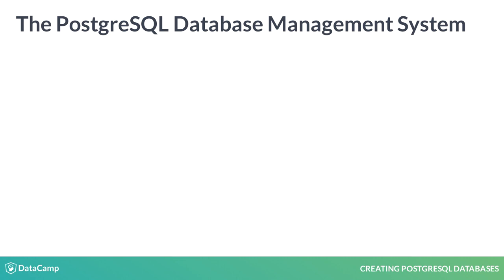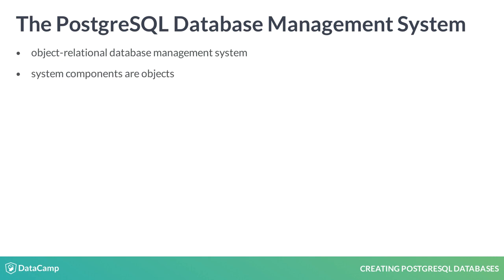PostgreSQL is an object-relational database system. This focus on objects is fundamental to the organization of this software. The components of the software, some of which we will be discussing in this course, are considered objects. The highest-level object is a database.